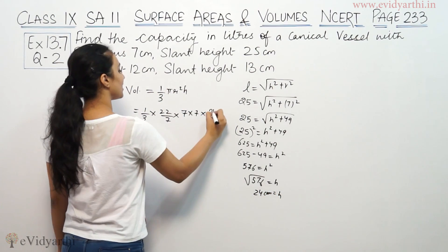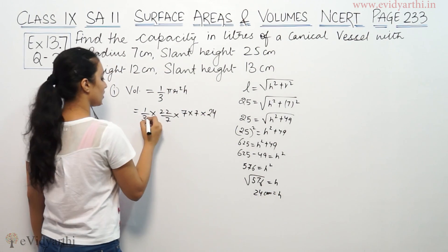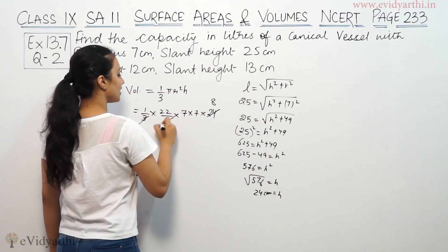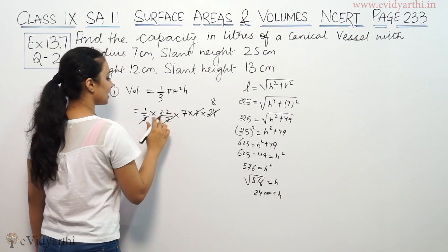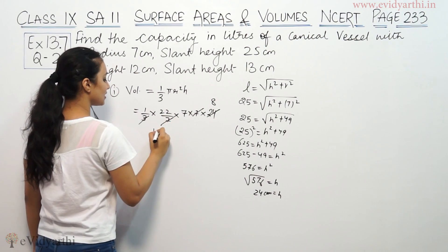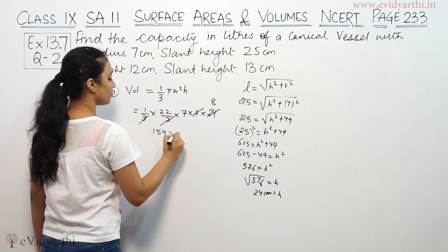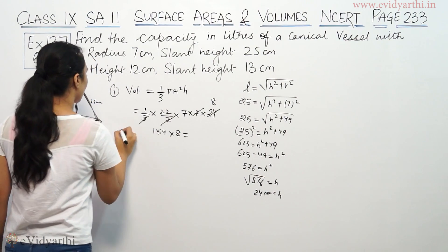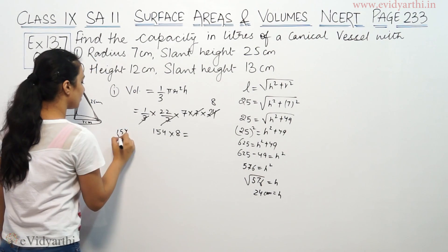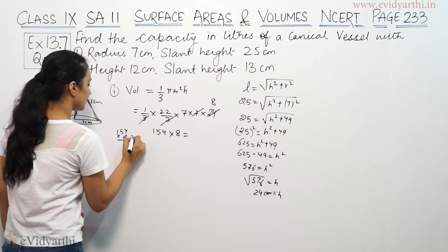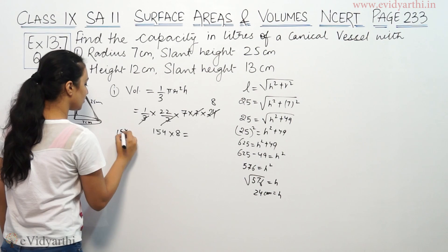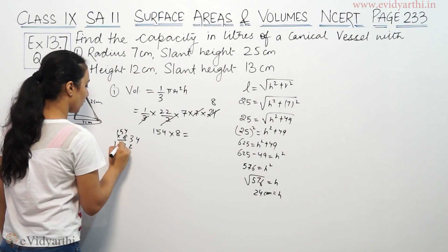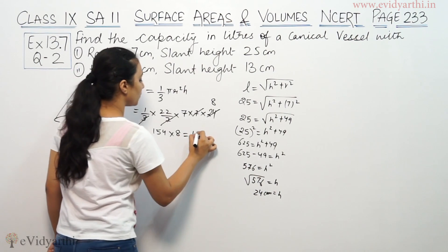So h is 24. Now volume = 1/3 × 22/7 × 7 × 7 × 24. The 3 and 24 simplify to 8, and the 7s cancel, giving 154 × 8 = 1232 cm³.